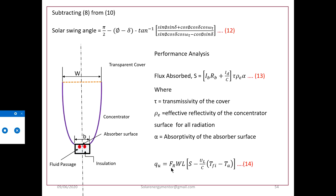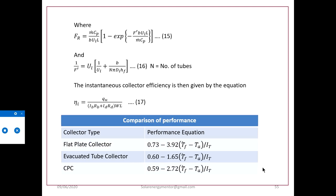Useful heat gain rate is calculated using: Q_u = F_R × W_a × [S − U_R / C × (T_f − T_a)], where F_R is the collector heat removal factor, W_a is the aperture area, U_R is the overall heat loss coefficient, C is the concentration ratio, T_f is the feed temperature entering the collector, and T_a is ambient temperature. F_R is evaluated using: F_R = (ṁ c_p) / (b × U_L × L) × [1 − exp(−b × U_L × L × F' / (ṁ c_p))].